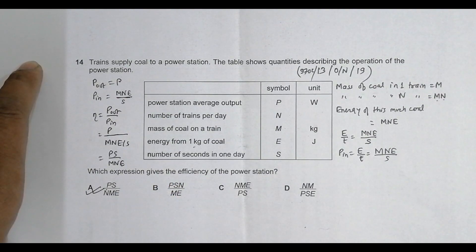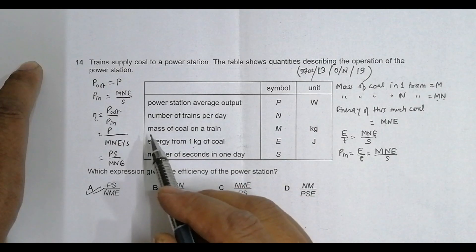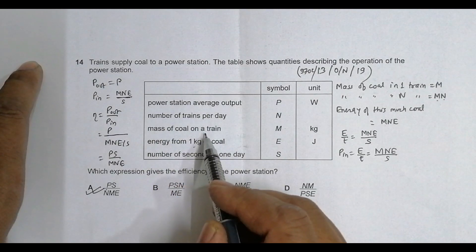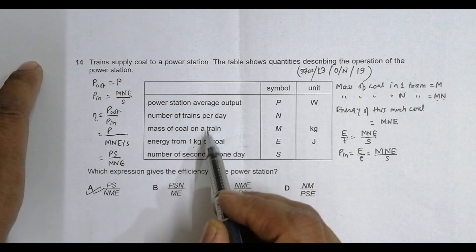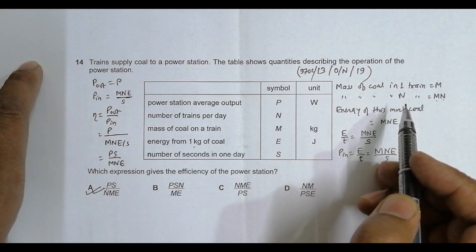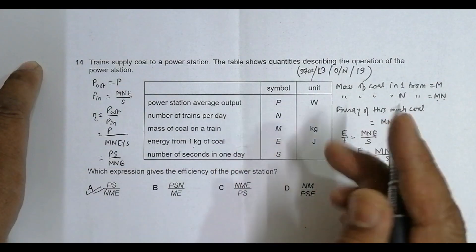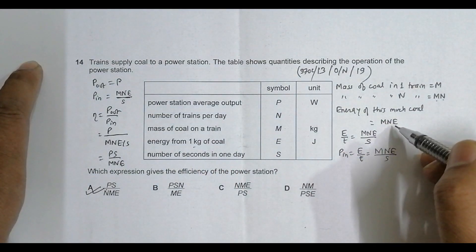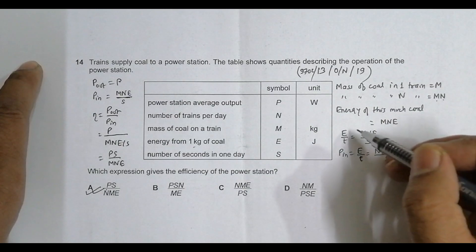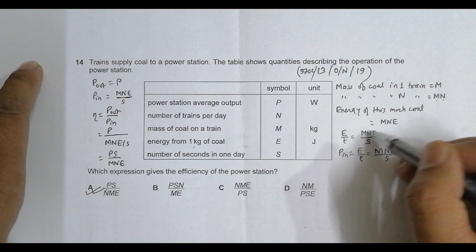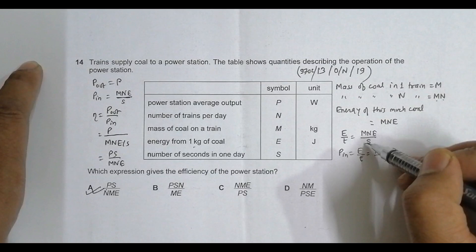What we have done here is follow simple unitary method from mathematics at the secondary level. Mass of coal in one train is M, so mass in N trains is MN. Energy from 1 kg equals E, so energy from MN kg equals MNE. This happens in one day, which is S seconds.